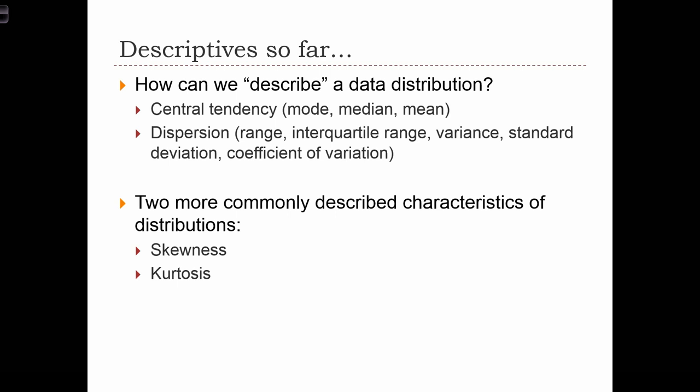What have we seen so far? We've seen a few ways that we can describe a data distribution. First of all, we've looked at central tendency, where we covered the mode, median, and mean. And then we looked at dispersion, where we looked at range, interquartile range, variance, standard deviation, and the coefficient of variation. There are two more commonly described characteristics of distributions. Those are skewness and kurtosis.